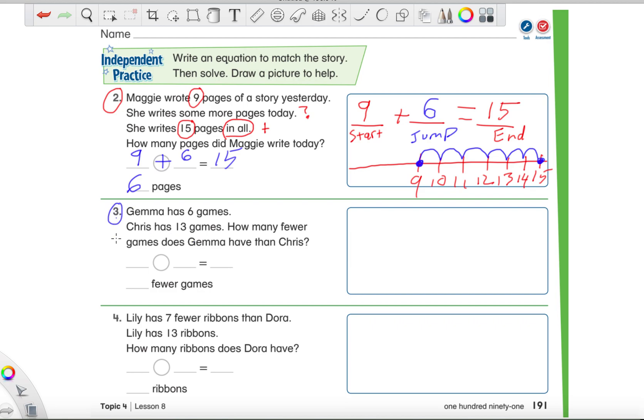Now, I would like for you guys to try 3 and 4 on your own but I will read them to you before I let you go off on your own. So it says Gemma has 6 games. Chris has 13 games. How many fewer games does Gemma have than Chris? Now think about that word fewer. Is that going to mean more or less? Number 4. Lily has 7 fewer ribbons than Dora. Lily has 13 ribbons. How many ribbons does Dora have?